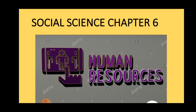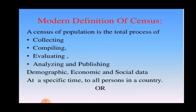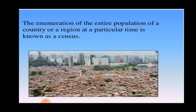In this early learning session, we are going to learn social science, Chapter 6: Human Resources. What is called Human Resources or the Census? A census of population is the total process of collecting, compiling, evaluating, analyzing and publishing demographic, economic and social data at a specific time for all persons in a country. The enumeration or collection and cataloging of information about people living in a country or region at a particular time is known as a census.